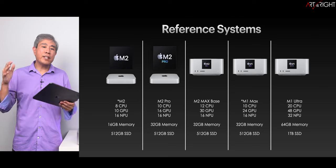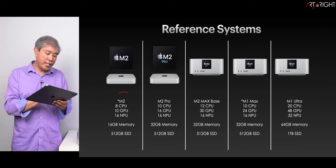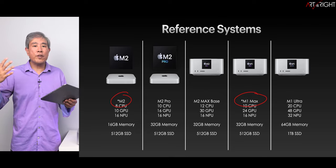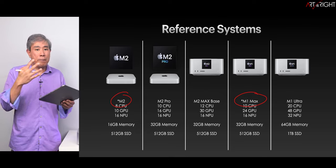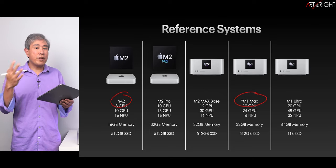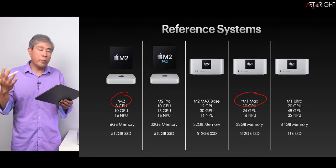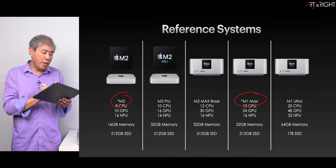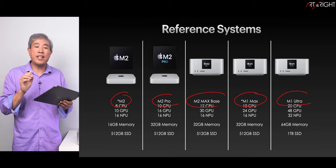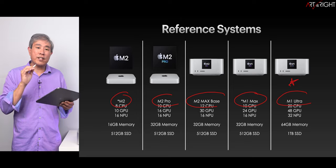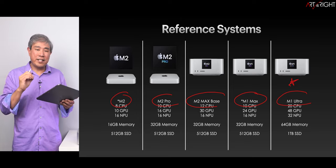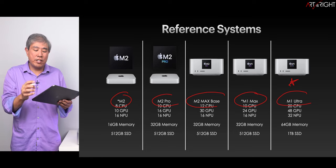I'm also going to add in results from other machines. The M2 and M1 Max results are from previous testing, so if there's any variation I'll let you know. I'm including the M2 Pro, M2 Mac Base, and also the M1 Ultra. The M1 Ultra machine — considering Apple is now selling it refurbished — is really a fantastic value compared to any of the current generation ones, and I'm still impressed by its performance.